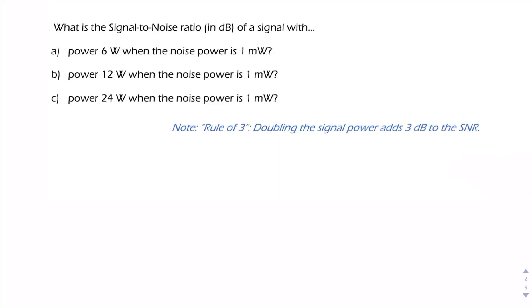In this question, we're asked to find the signal-to-noise ratio, and we're given the respective powers of the signal and the noise. Remember the definition of the signal-to-noise ratio: it's simply 10 log to the base 10, the signal power divided by the noise power.